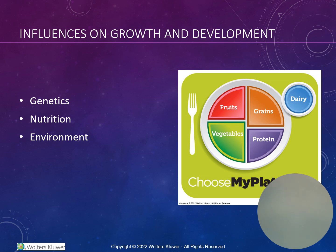Physical activity: set a good example for your child and establish a routine. Have an activity party, set up a home gym, move it, and maybe give activity gifts. Many aspects of the environment are also going to affect growth and development, such as family structure, socioeconomic level, and play and entertainment.